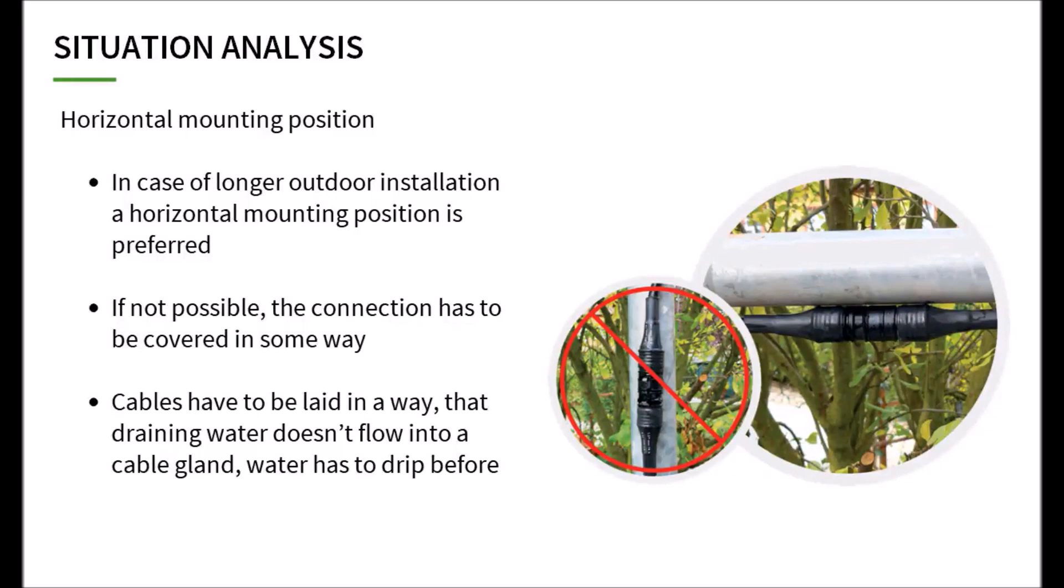Horizontal mounting position. If the unit is to be used outdoors for a longer period of time, a horizontal installation position must be selected to ensure that the water can drain away. If this is not possible, an additional cover should be used for protection. The cable routing also plays an important role. The cable must be laid in such a way that the water draining off it is not led to the cable gland but drips off beforehand.